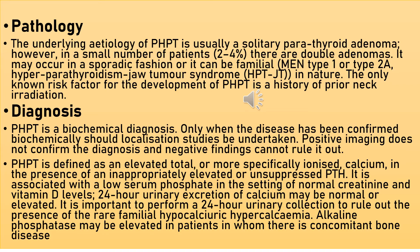The diagnosis is mainly biochemical. Only when the disease has been confirmed biochemically can localization studies be undertaken. Positive imaging does not confirm the diagnosis, and negative findings cannot rule it out. Primary hyperparathyroidism is defined as an elevated total or ionized calcium in the presence of inappropriately elevated or unsuppressed parathyroid hormone. It is associated with low serum phosphate in the setting of normal creatinine and vitamin D levels. A 24-hour urinary calcium may be normal or elevated, and this collection is important to rule out familial hypocalciuric hypercalcemia. Alkaline phosphatase may be elevated in patients with concomitant bone disease.